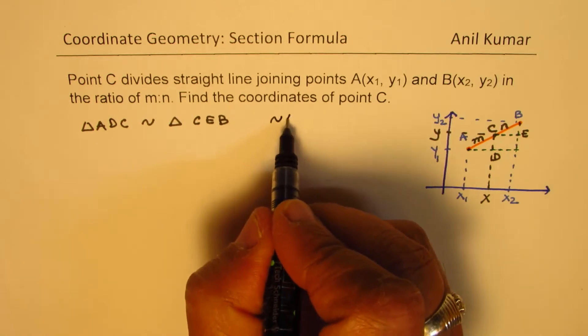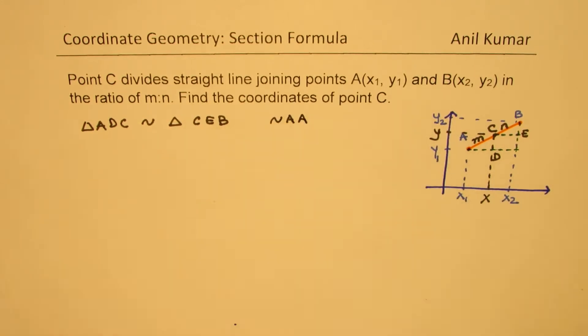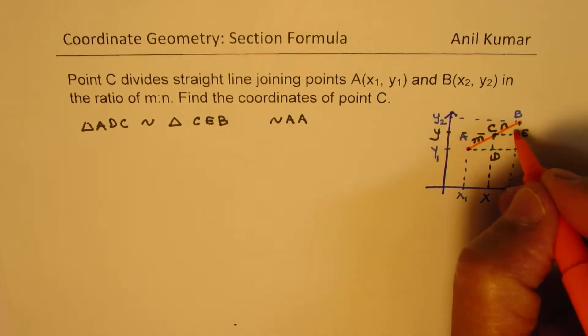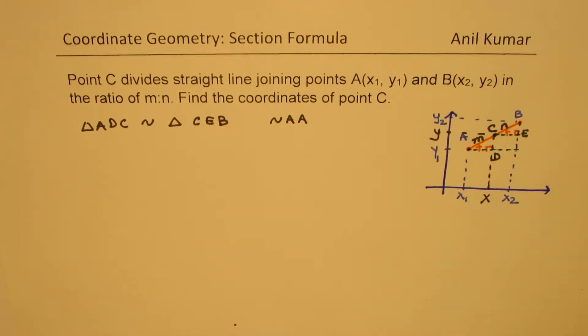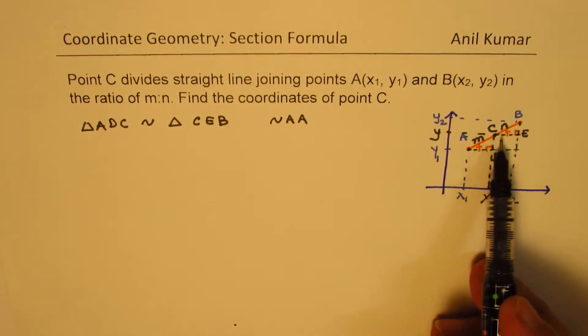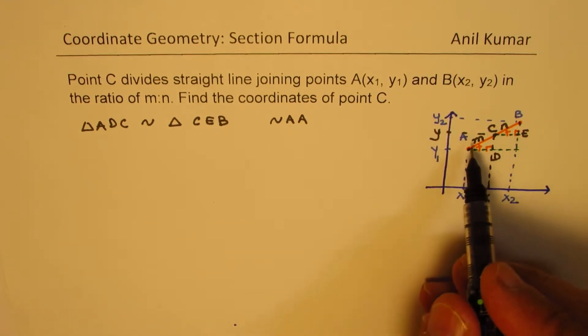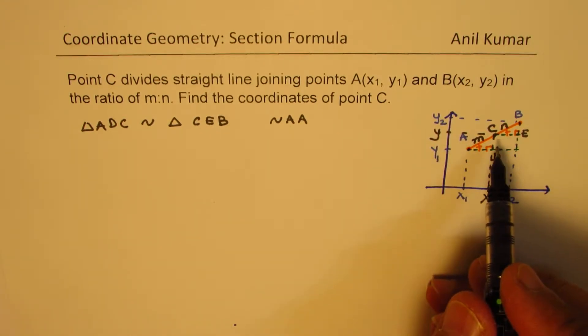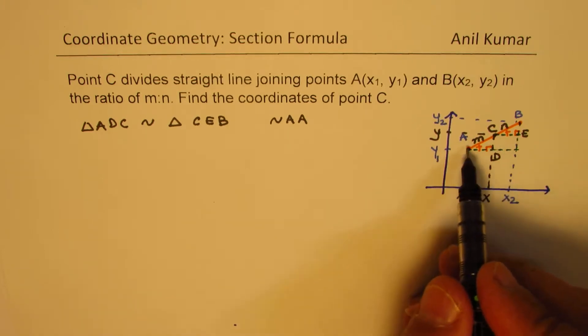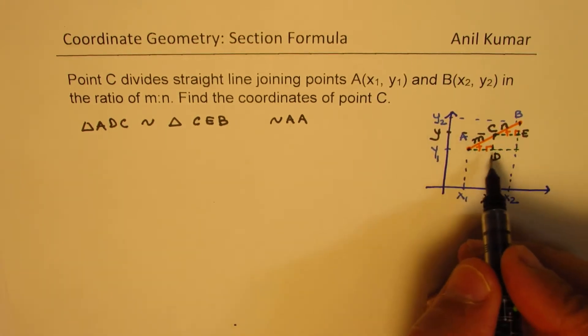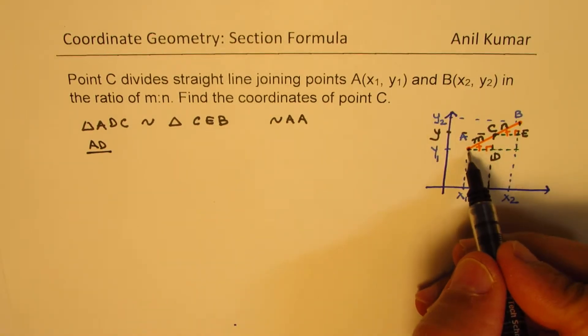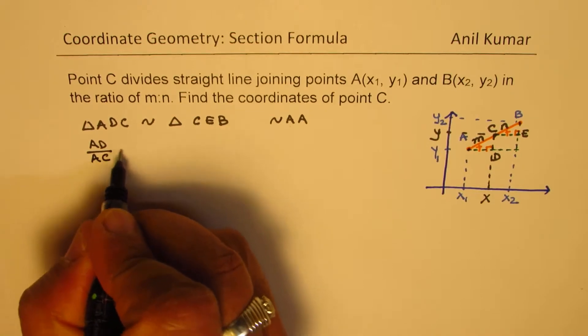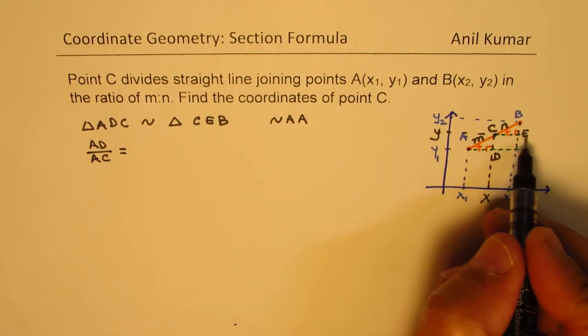This you get from AA property. Since we have right angles here, parallel lines, so corresponding angles are equal. So these two are similar triangles. Since they are similar triangles, we can write down that the ratios are constant.